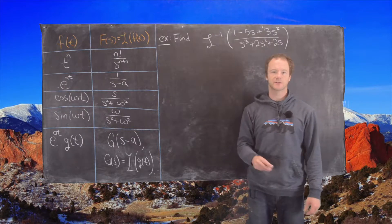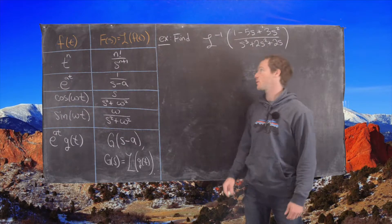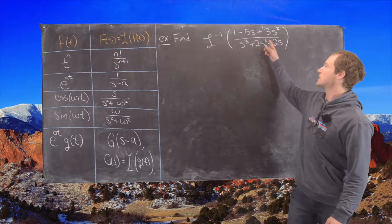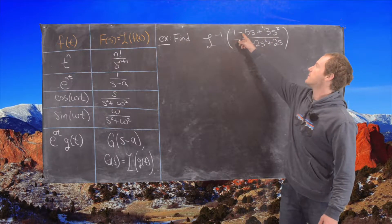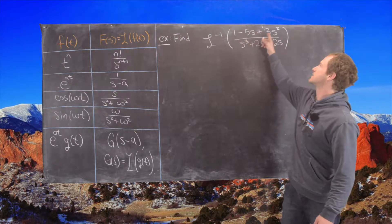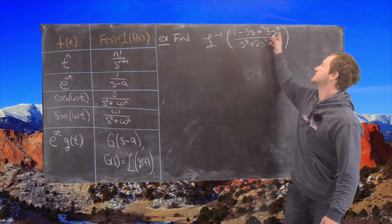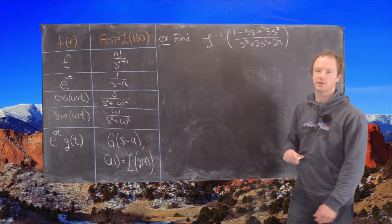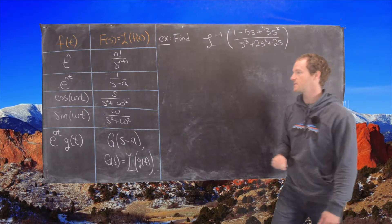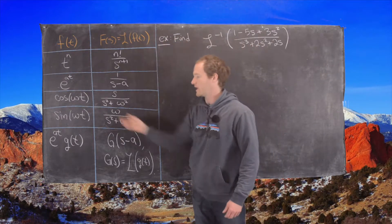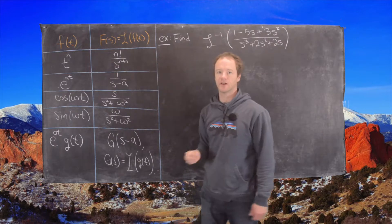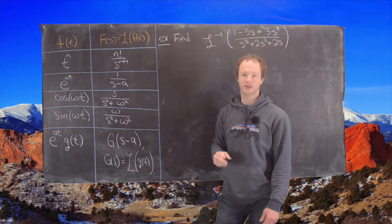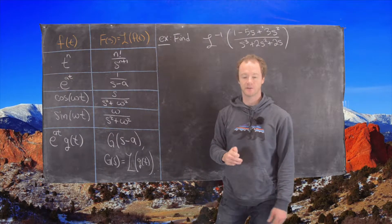In this video we're going to find the inverse Laplace transform of a rational function. We're going to be looking at 1 minus 5s plus 3s squared over s cubed plus 2s squared plus 2s. As a point of reference, I've included a small chart of Laplace transforms that we'll make use of.